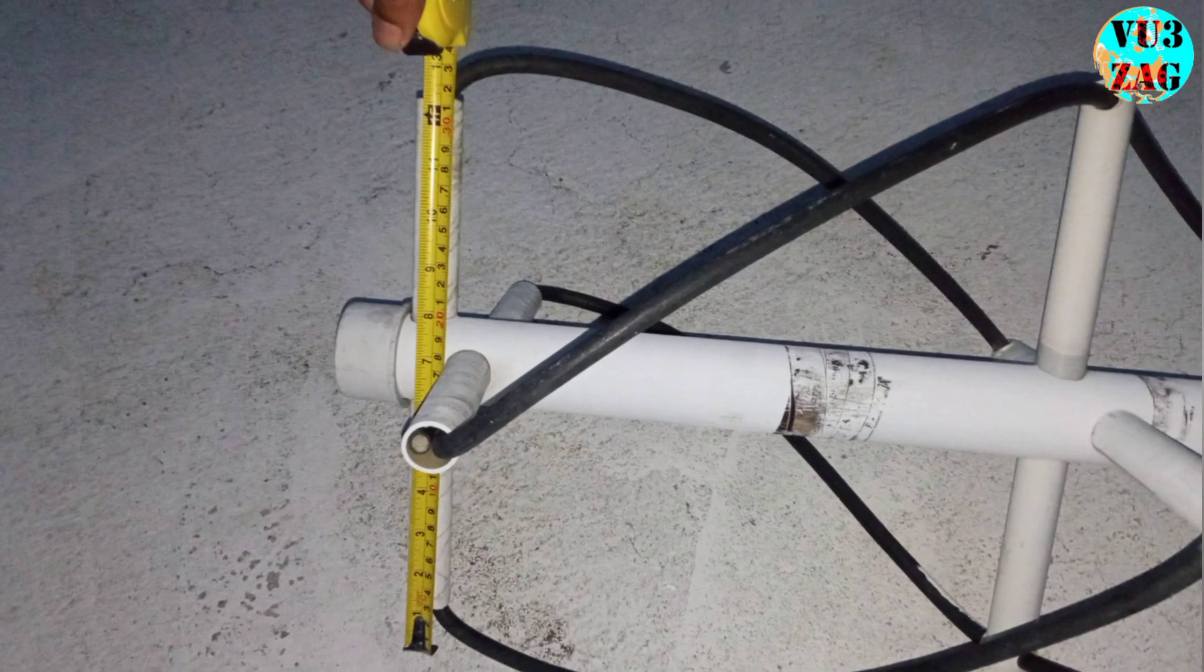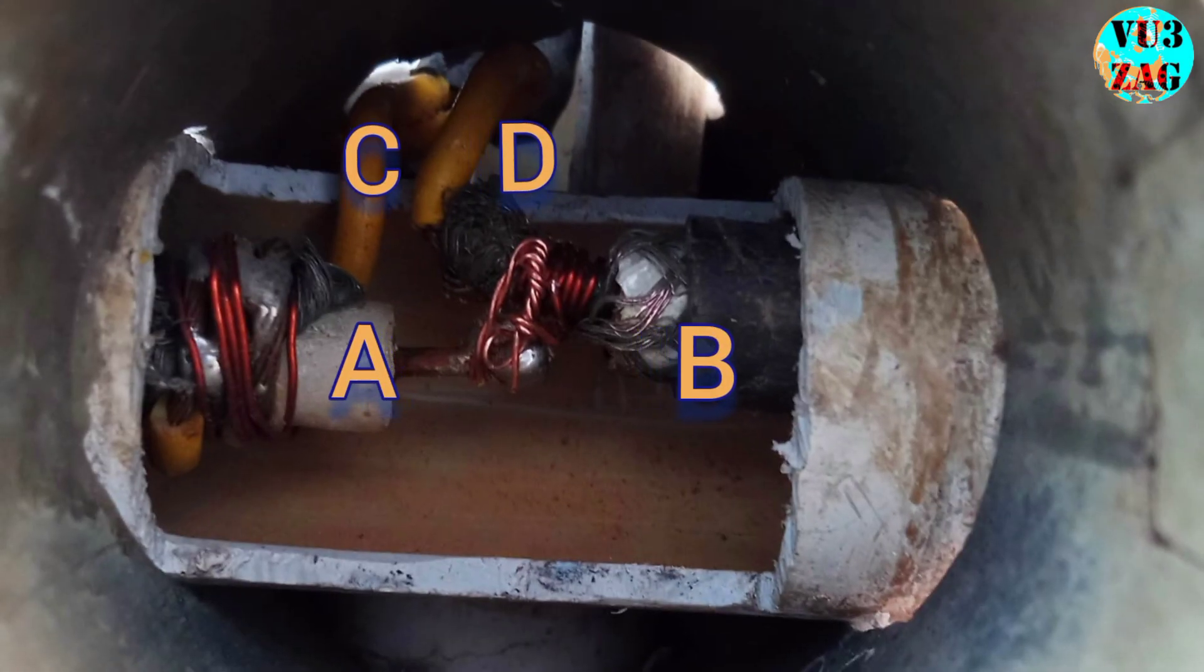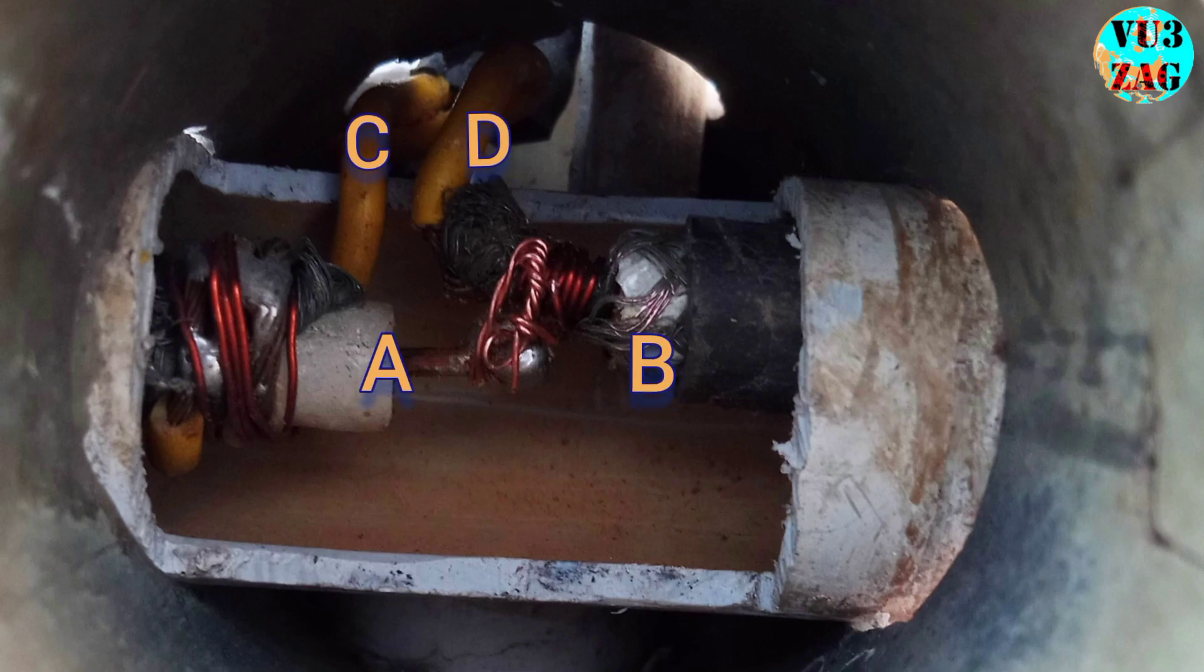The two coaxial cables meet at the top of the antenna and are connected as per the diagram. Since the braid of the coaxial cable is made up of aluminum, there were challenges in soldering using normal solder. So I have used alternative methods like tying the required cables to each other using fine copper wire.